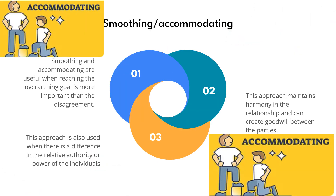Smoothing, accommodating. The smoothing, accommodating conflict resolution involves prioritizing the overall project goal and maintaining harmony between parties over resolving a specific disagreement. This approach is useful when preserving relationships and achieving the project's objectives are of greater importance than the particular issue causing the conflict.